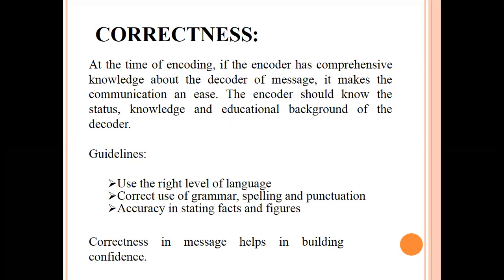Correctness is the first point we should focus on. The encoder should know the basics and mental state of the decoder. For applying correctness, the encoder should use the right level of language — not too difficult and not irrelevant. For example, if you are discussing scientific literature and using essay-writing words, it will not be good for the decoder to understand. Correct use of grammar, spelling, punctuation, and specifically pronunciation, as well as accuracy in stating facts and figures, helps build confidence in both encoder and decoder.